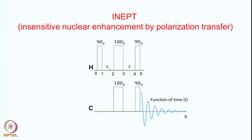You will also recall that this is very similar to the spin echo sequence. The spin echo also had 90, 180, 90 pulses separated by time tau, except that we are now using it as a heteronuclear experiment for transferring polarization from proton to carbon. Let us analyze how it happens using the product operator formalism.